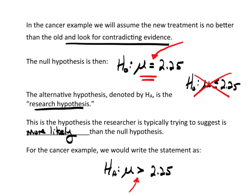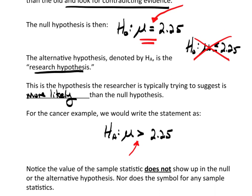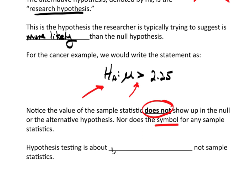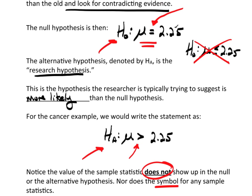Something very important to note: nowhere in the null or the alternative hypothesis do you see a sample statistic. Notice the value of the sample statistic does not show up in the null or alternative hypothesis — nor does the symbol for any statistics. There are no X-bars in here. The hypothesis test is about population parameters, not sample statistics.